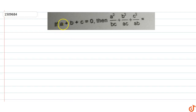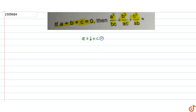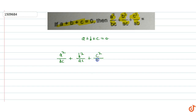If a plus b plus c equals zero, then we need to find a square upon bc plus b square upon ac plus c square upon ab. Since a plus b plus c equals zero, we combine the terms over the common denominator abc, giving us a cube plus b cube plus c cube upon abc.